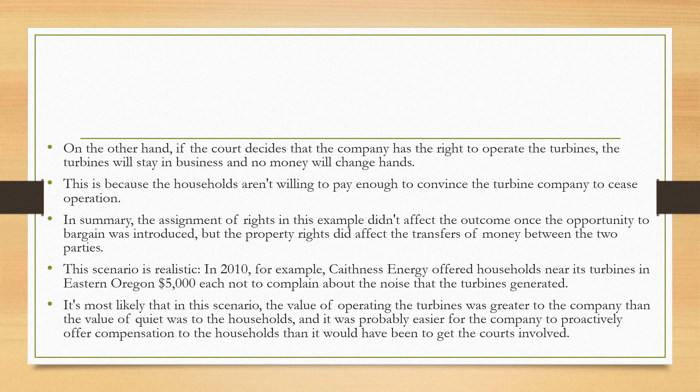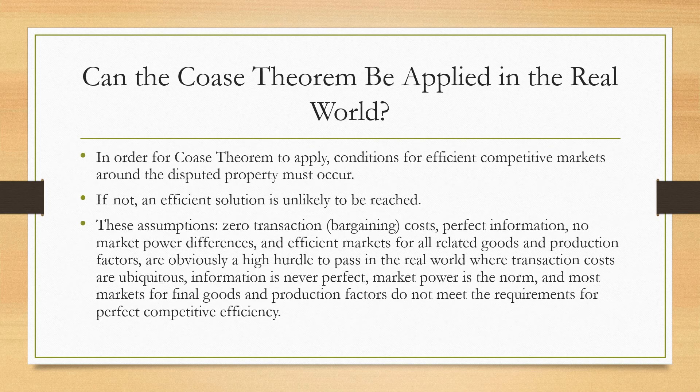This scenario is close to real life. In 2010, Catness Energy offered households near its turbines in eastern Oregon $5,000 each not to complain about the noise that the turbines generate. Most likely, the value of the operating turbine was greater to the company than the value of quietness was to the household, and it was probably easier for the company to proactively offer compensation to the household than to get the courts involved.